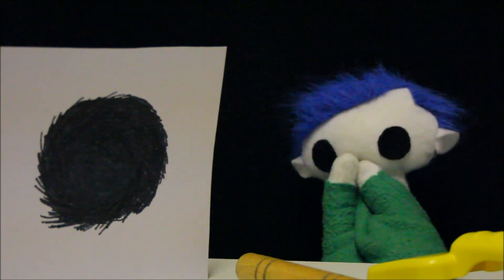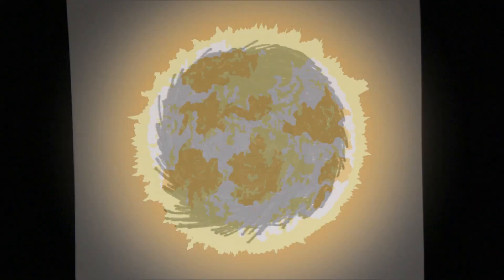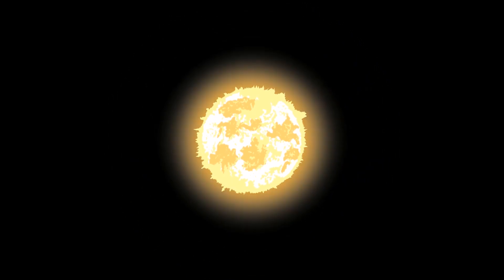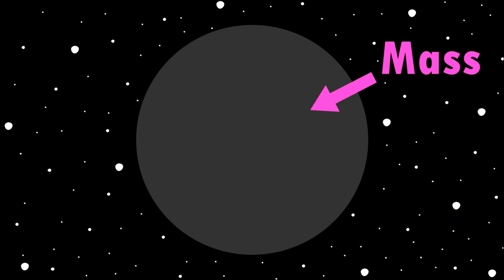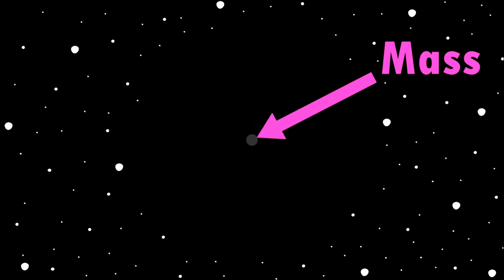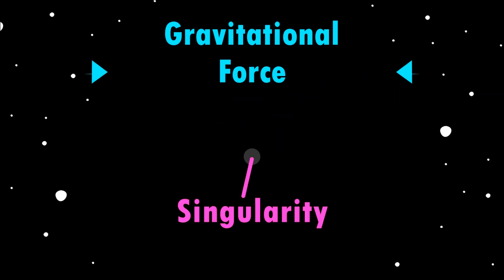Black holes are very strange and mysterious objects in space. Odie, do you want to learn about black holes? A black hole is formed when a giant star at the end of its life cycle explodes. All of the mass left over by the giant star collapses down to a small point. This point is called the singularity. Even though the star has become very tiny, its gravitational force is extremely strong and is the strongest at the singularity.